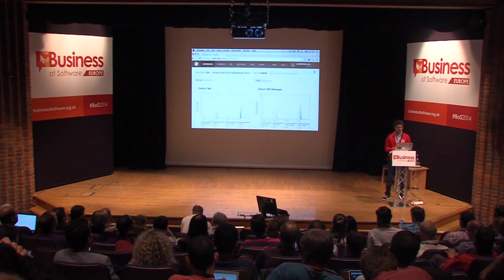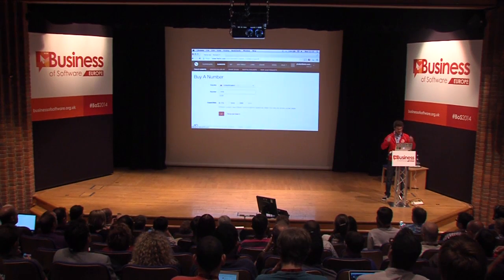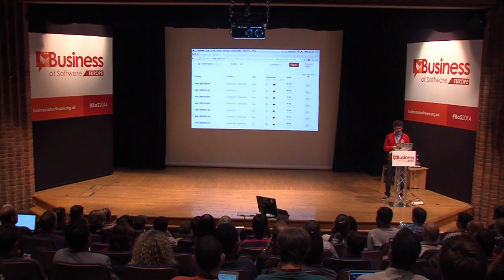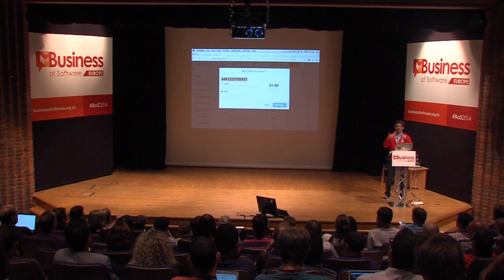I can do that through the Twilio platform here. I can go and buy a number — we have numbers available in over 50 countries. I'm going to get one in the UK, here in Cambridge, because we're in Cambridge and it's good to have a local number. I'll buy a random number; this one does voice and SMS so I have full functionality. I can send SMS and voice anywhere in the world except Antarctica and Iraq, for obvious reasons.